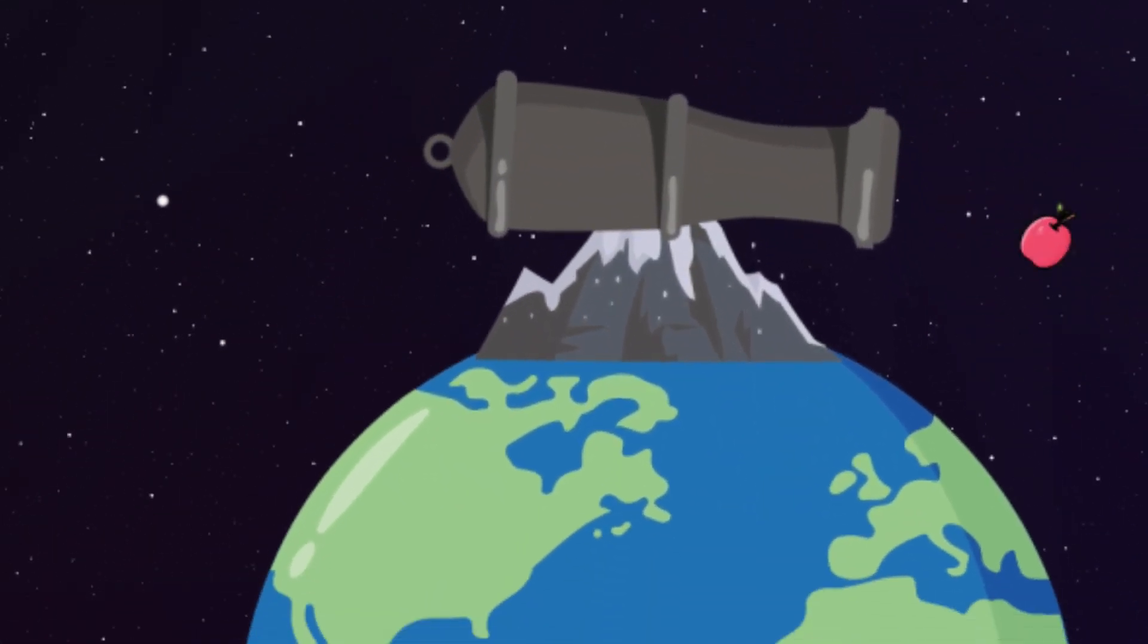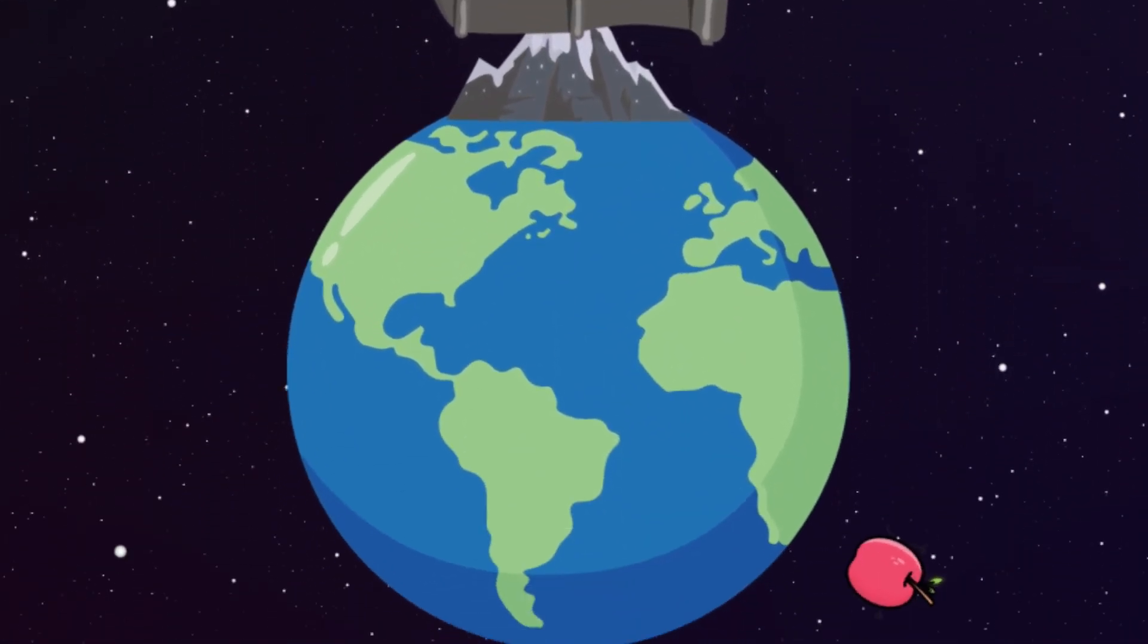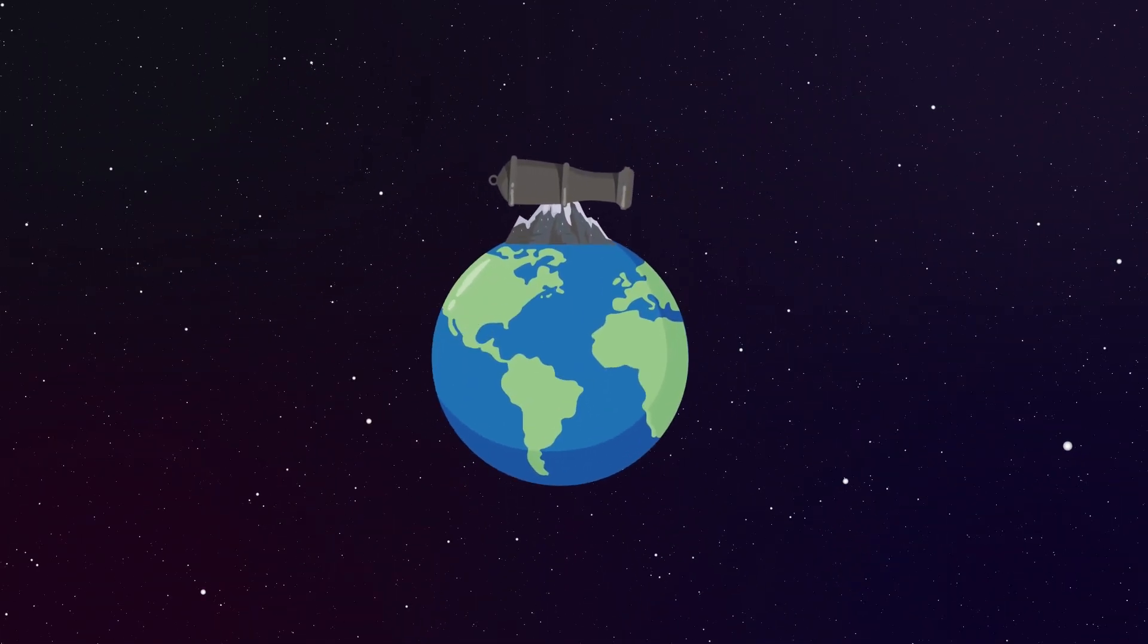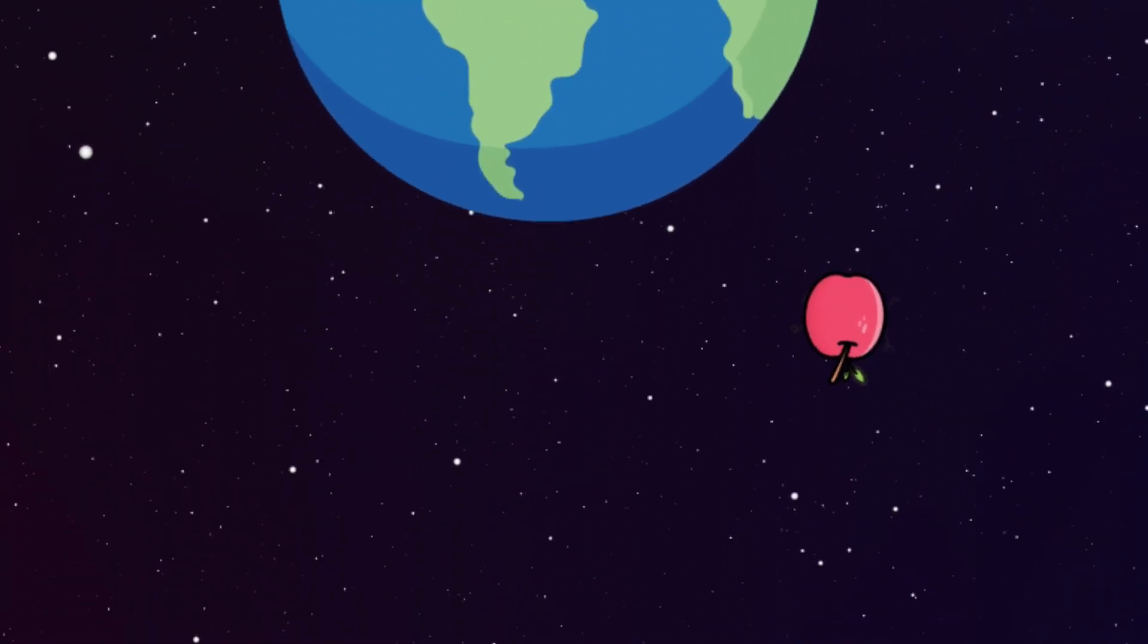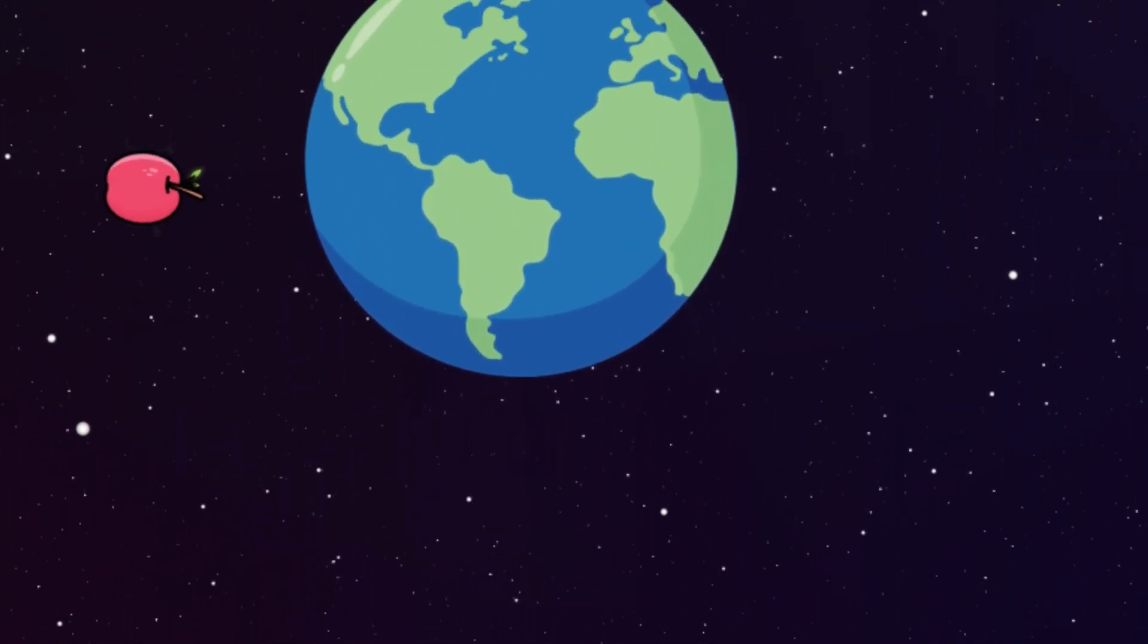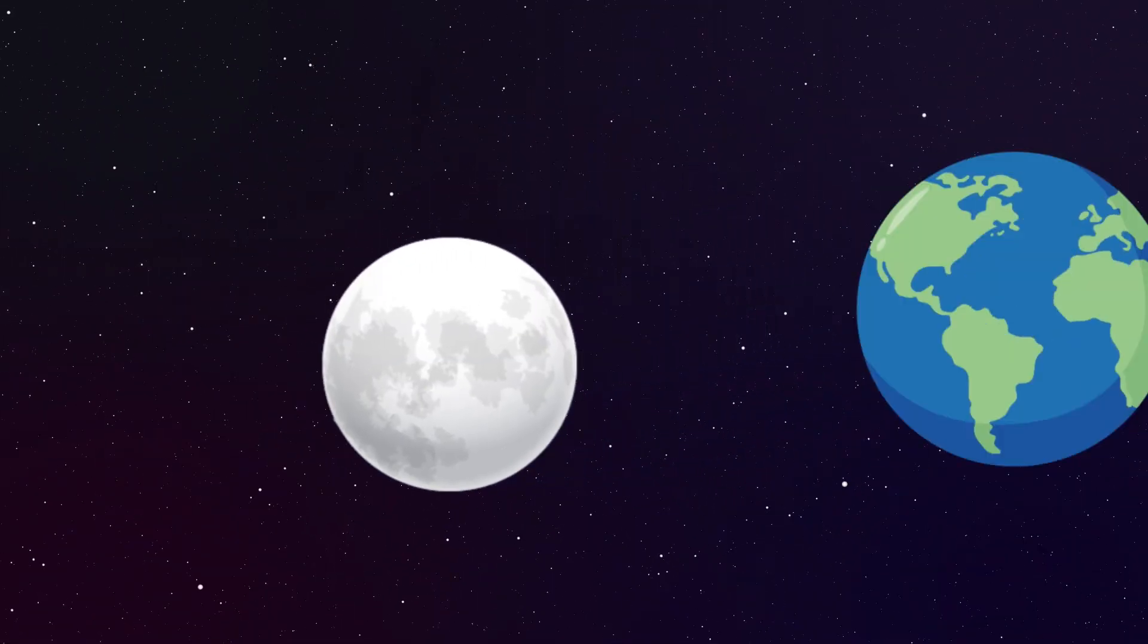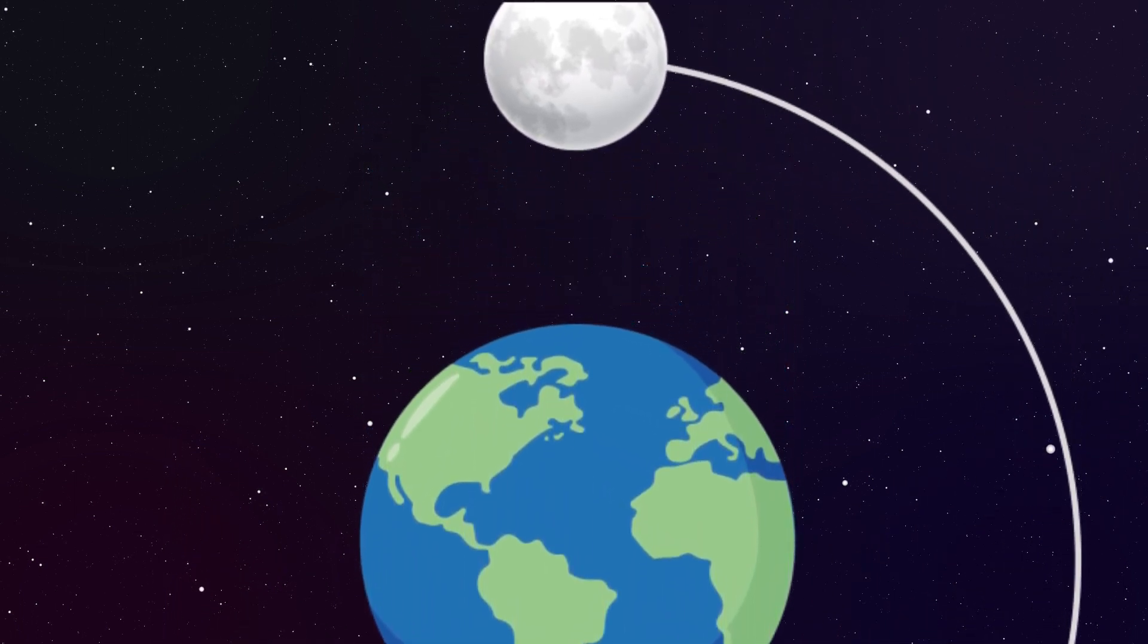If you pick the right velocity for the cannonball, known as orbital speed, the trajectory of the cannonball would curve at exactly the same rate the Earth curves, and therefore the cannonball would always stay the same height above the ground. It would go on circling around the Earth along a fixed circular orbit, just like the moon. With this, Newton was able to explain the orbit of the moon with his theory of gravity.